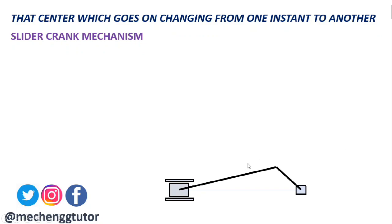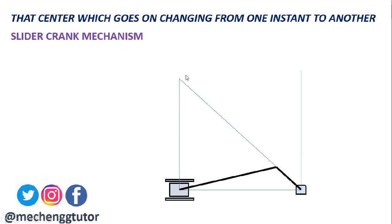To obtain the instantaneous centers, we draw construction lines: the first line is drawn vertically upward from the pivot point, and the second line is drawn vertically upward from the center of the slider. We then extend the crank until it meets the slider's construction line, and extend the connecting rod until it meets the construction line from the pivot.